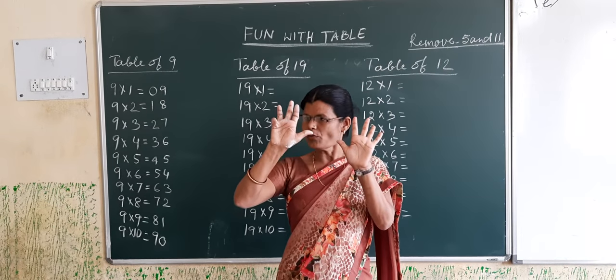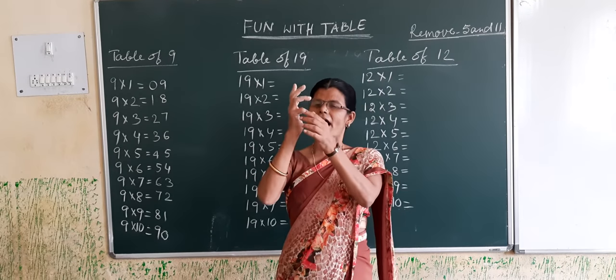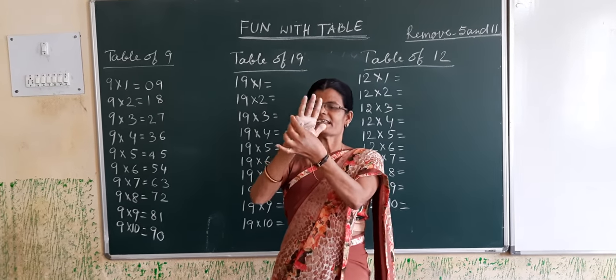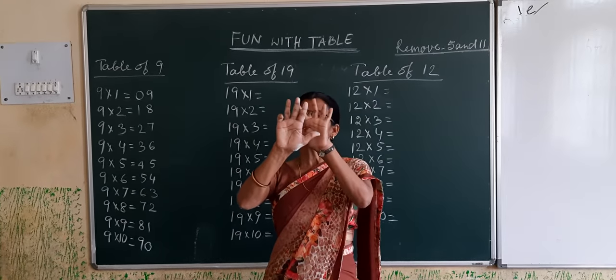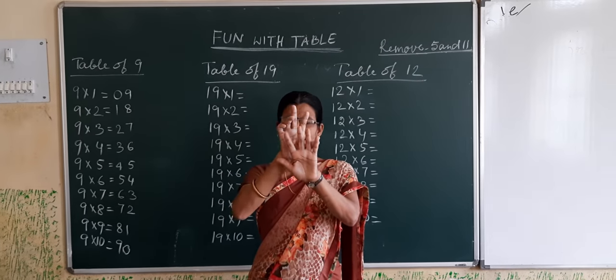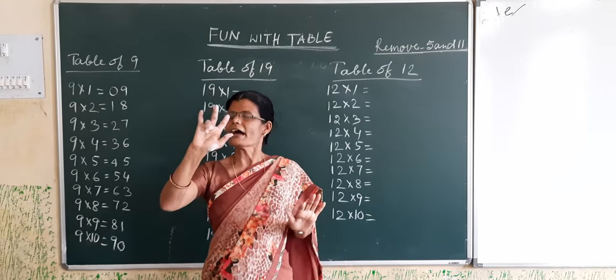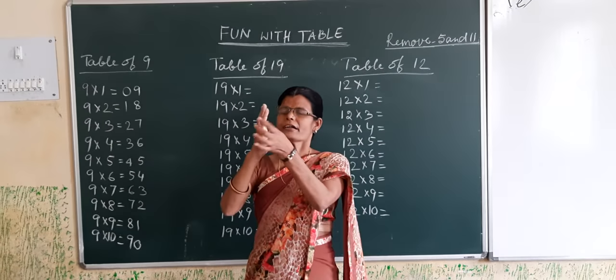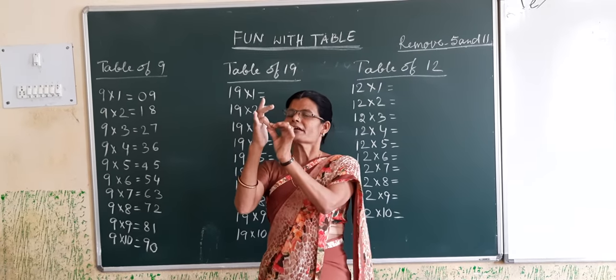9 ones are 9. Count 1, 2, 3, 4, 5, 6, 7, 8, 9. Now see, 9 twos are 18. This is the finger of 2.